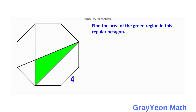Our strategy is: since this is a triangle, we need to find the vertical height, which should be perpendicular to the base. We also find the base and use the formula for the area of a triangle: one half times base times height.